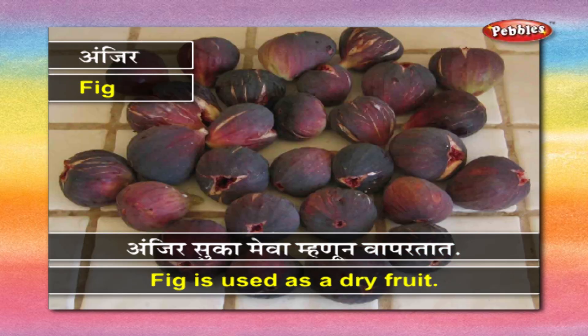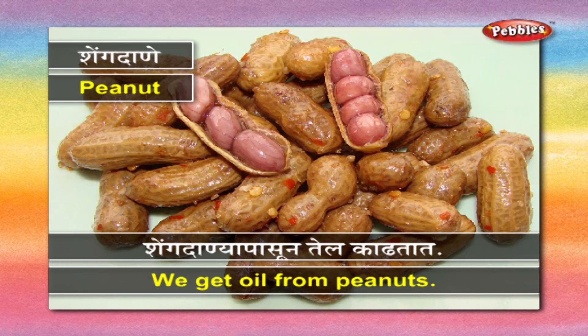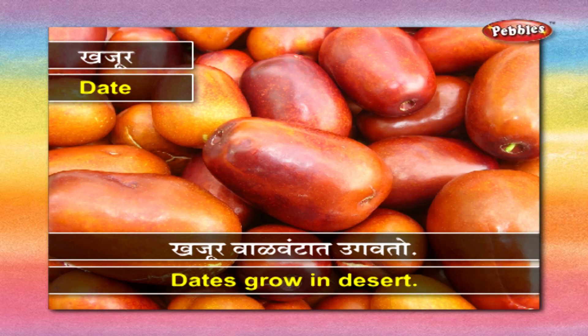अंजीर - अंजीर सुका मेवा म्हणून वापरतात. शेंगदाणे - शेंगदाण्यापासून तेल काढतात. खजूर - खजूर वाळवंटात उगवतो.